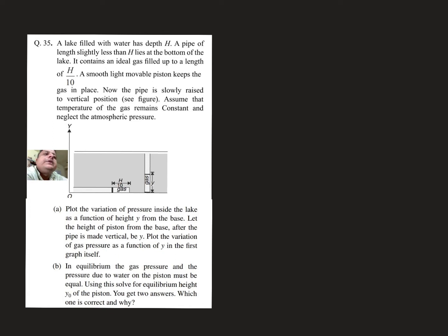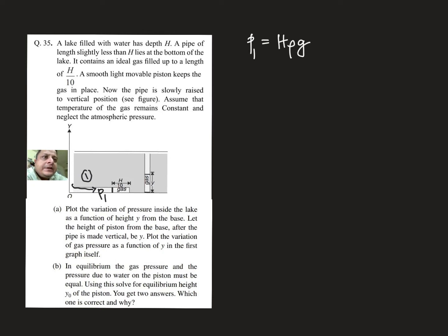Let's look at this problem. A lake filled with water has depth h. A pipe of length slightly less than h lies at the bottom of the lake. It contains an ideal gas filled up to a length of h/10, so liquid will get into the remaining space. At stage one, the pressure of the gas p1 equals h·ρ·g, neglecting atmospheric pressure. Otherwise p1 would be p0 plus h·ρ·g. A smooth light movable piston keeps the gas in place. The pipe is slowly raised to vertical position as shown in the figure, and temperature remains constant.